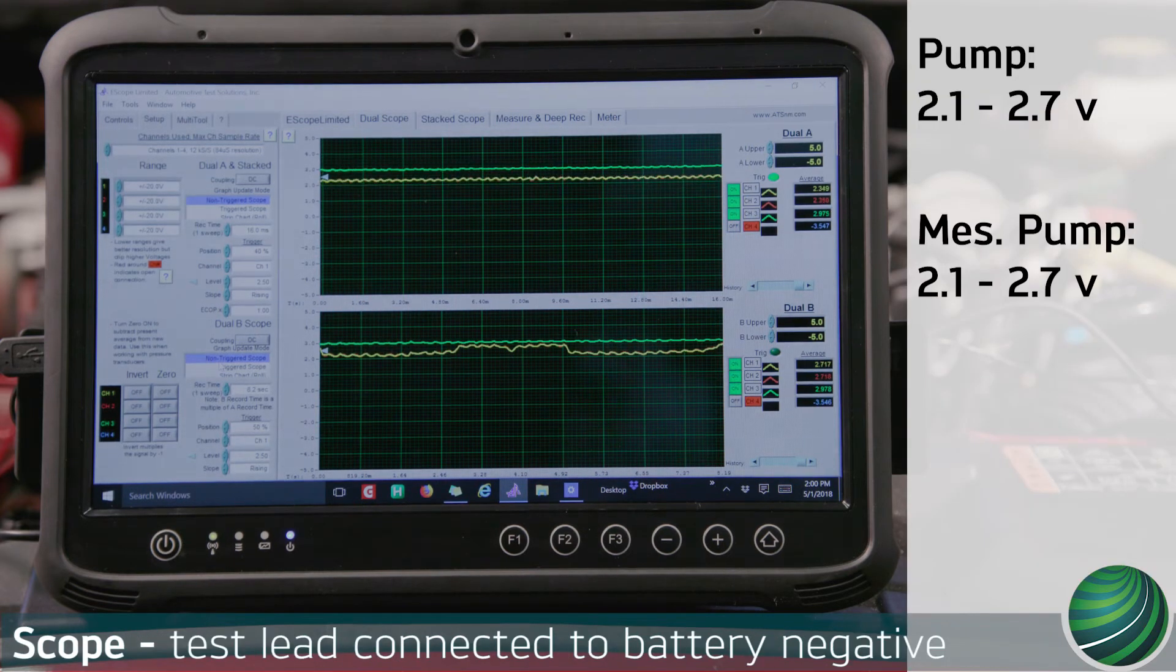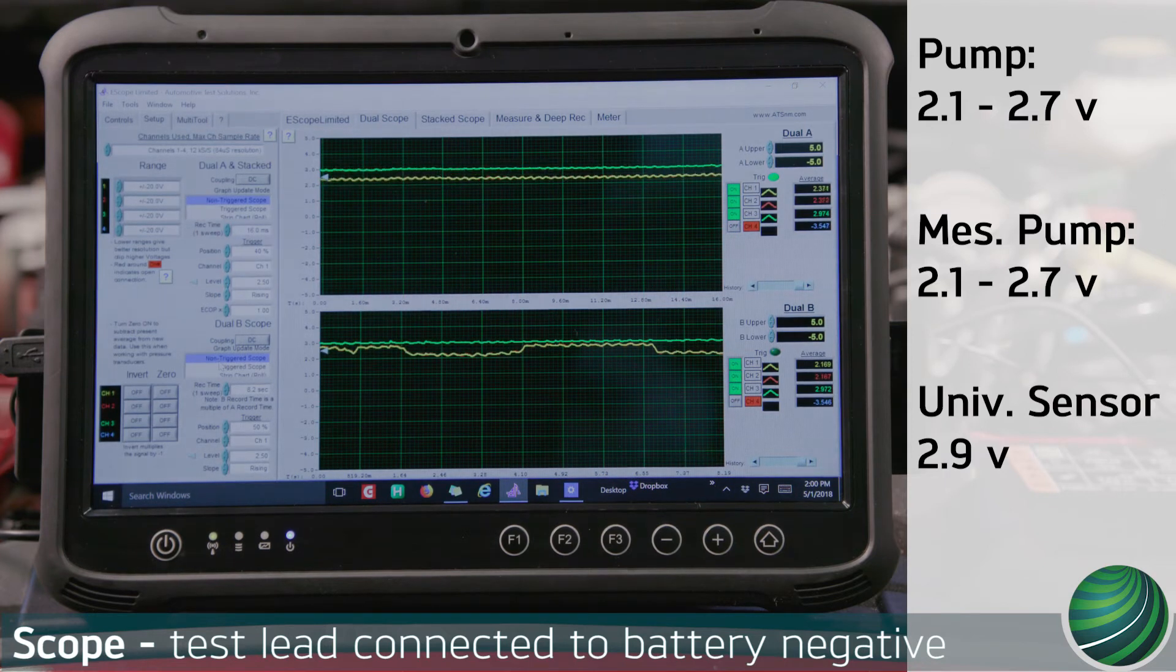Pump and measured pump circuit voltage is fluctuating from 2.1 to 2.7 volts. The universal sensor holds steady at 2.9 volts. These are normal readings on a good sensor.